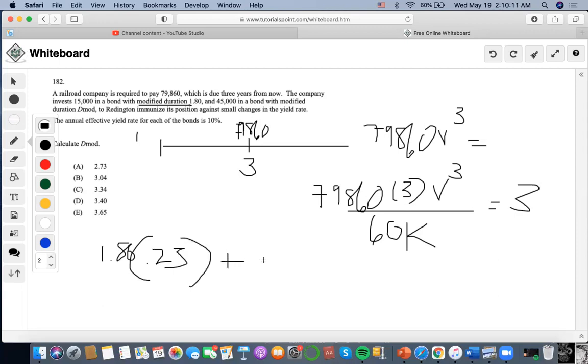And then now plus mod D, we have to find the weight of this one, so we'll do $45,000 divided by $60,000, and we're going to get 0.75. Now, we only found the Macaulay duration of this, we want to divide it by V to find the mod, so we're going to do 3 divided by 1.10, and we're going to get 2.72.